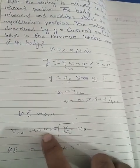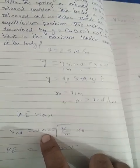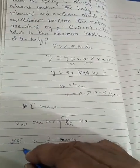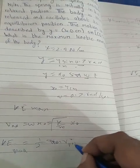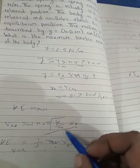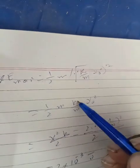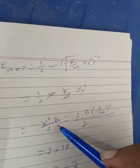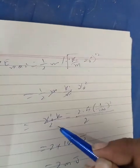For maximum kinetic energy, we need the direct formula. V maximum equals omega times x-naught, and omega equals root k upon m times x-naught. Maximum kinetic energy equals half m V maximum squared. This simplifies to half k x-naught squared when we substitute and cancel terms.